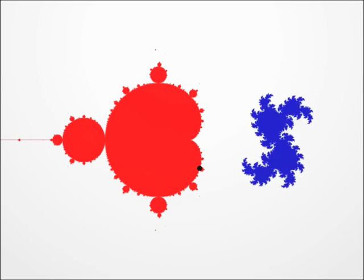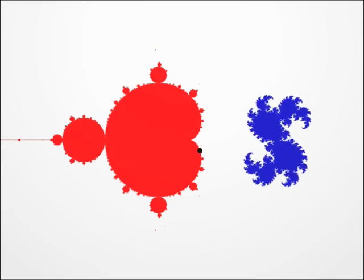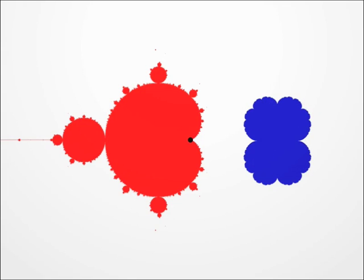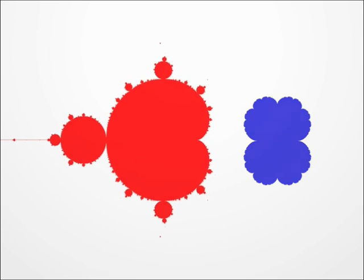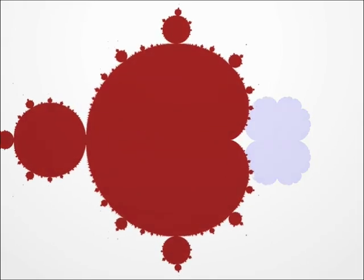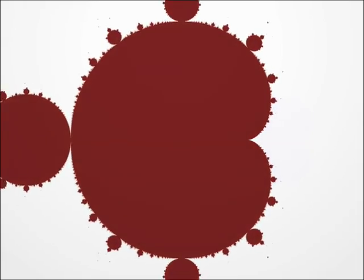Benoit Mandelbrot, who popularised fractal sets, suggested the study of this set, drawn in red, that describes the values of C for which one can see the Julia set clearly on the screen — in other words, those for which the Julia set did not blow up into multiple pieces. Of course, this red set is called the Mandelbrot set, and I spent quite a lot of time studying it.